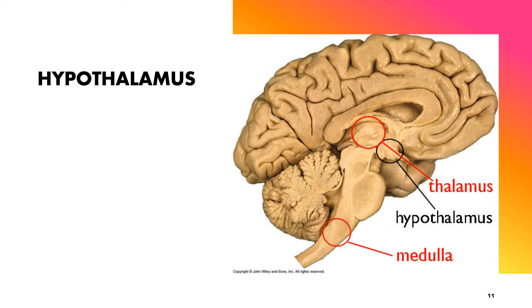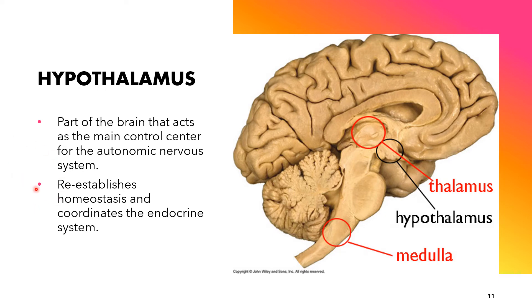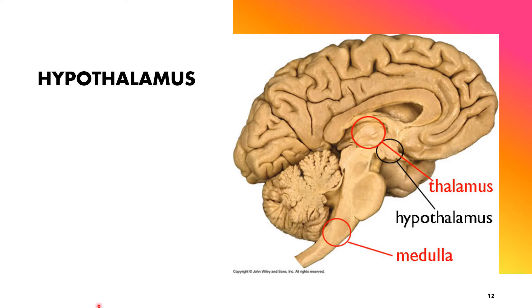The hypothalamus is considered to be a part of the brain and acts as the main control center for the autonomic nervous system. Its main function is to reestablish homeostasis and coordinate the endocrine system. It is considered a master gland because it secretes hormones that control other endocrine glands. It is the most essential part of the endocrine system because it serves as a link between the endocrine and nervous systems, and it secretes hormones that stimulate or suppress the release of hormones in the pituitary gland — referred to as releasing and inhibiting hormones, respectively.